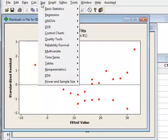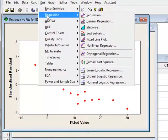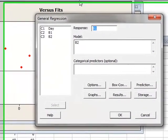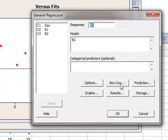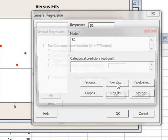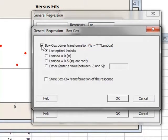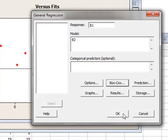We will return to Stat, Regression, General Regression. But now we will select a Box-Cox transformation by clicking here, and we will request the analysis to fit an optimal value of lambda. We will click OK and run the analysis again.